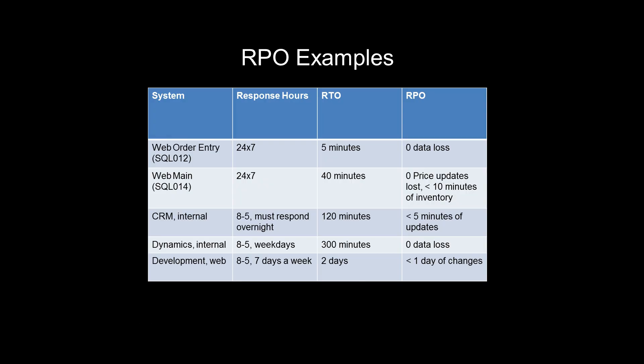Here I've added RPO to my table — I've got zero data loss for some systems. Zero data loss is possible if you've got the right combination of technologies. In other places, I've got minutes of changes that we're going to allow as loss, because maybe we have those audited somewhere else or we can manually enter them later from paperwork or receipts. It's important to specify this in time with your clients — ten transactions could occur in ten milliseconds or it could take ten hours. You need to know how often you run your backups and how often you make copies.